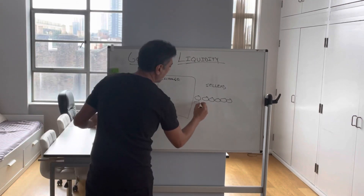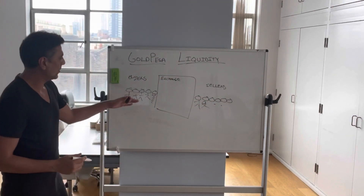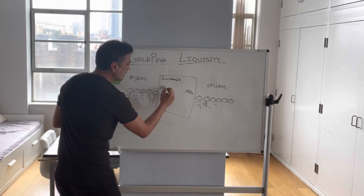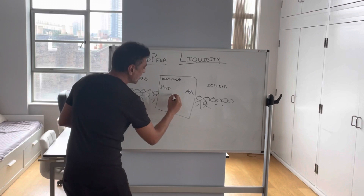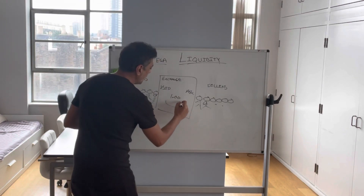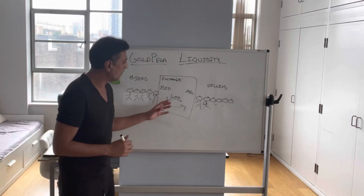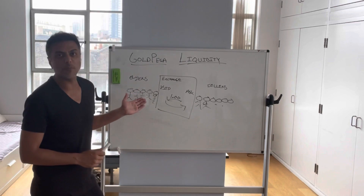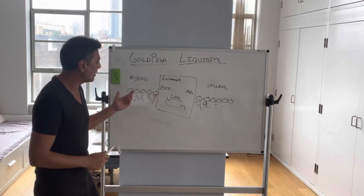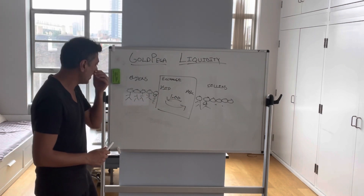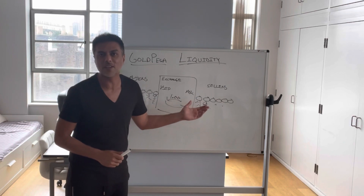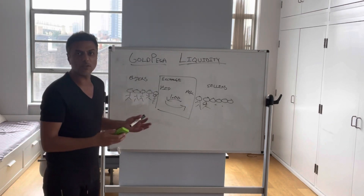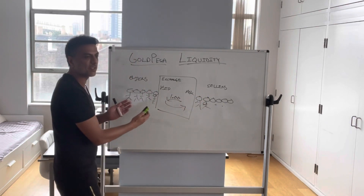These sellers have an asking price — it's called the ask — and these buyers have a bid price, and when they both agree on the same price, say a dollar, this asset will be transacted. In this model, in order to sell your asset you need to ensure there are enough buyers available in the market. Likewise, if you are a buyer, you want to know there are sellers willing to sell to you. Depending on the weight of buyers and sellers, the price naturally moves in one direction or the other based on supply and demand.